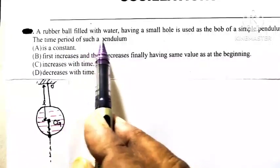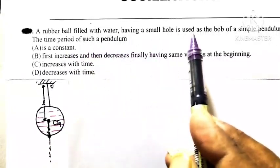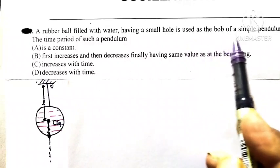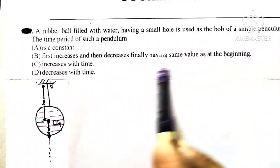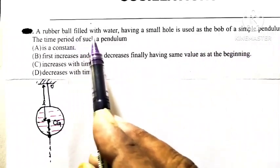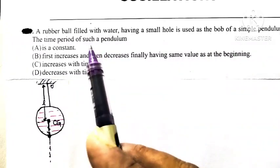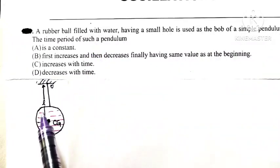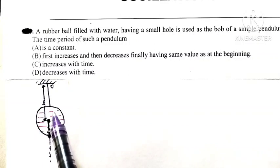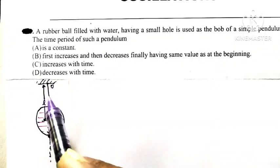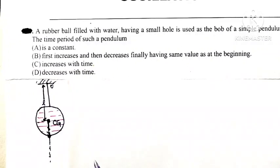A rubber ball filled with water having a small hole is used as a bob of simple pendulum. The time period of such pendulum is... See here we are having a rubber ball which is completely filled with water and it is used as a bob of simple pendulum, means it is suspended with the help of thread.